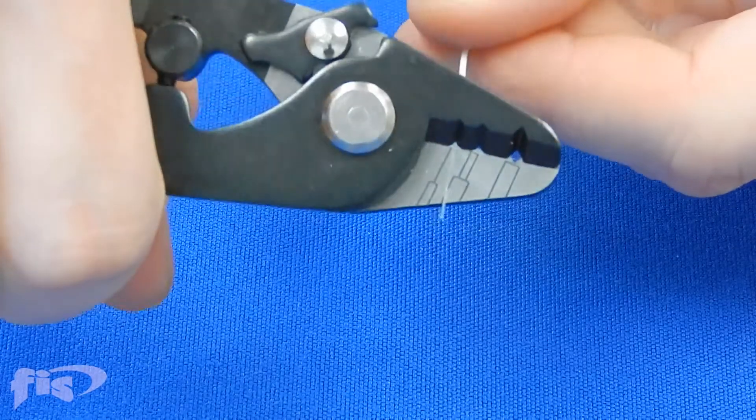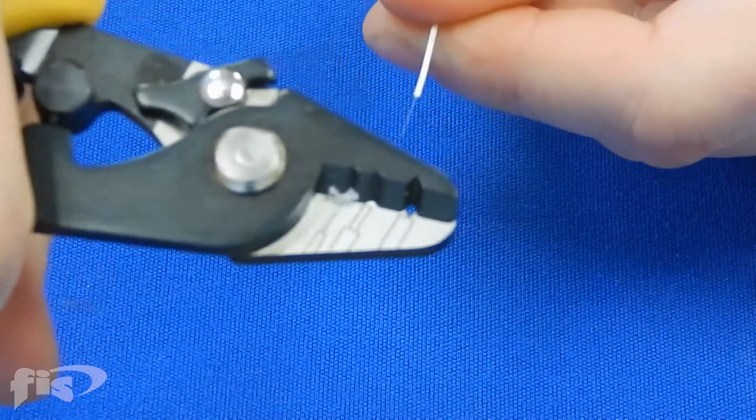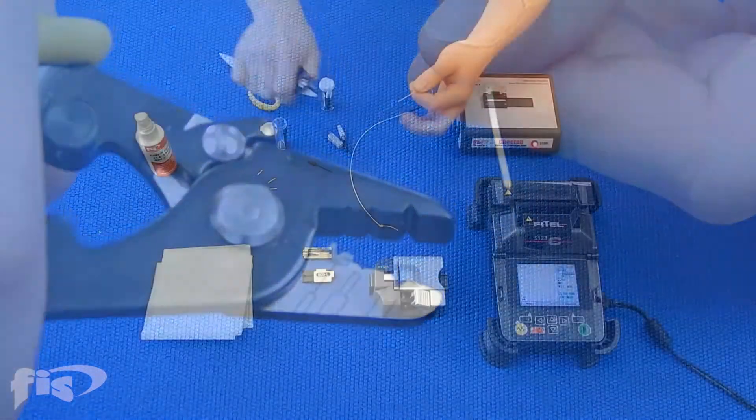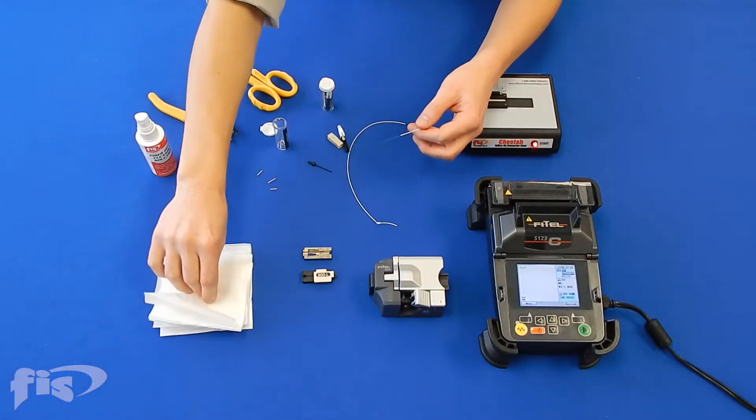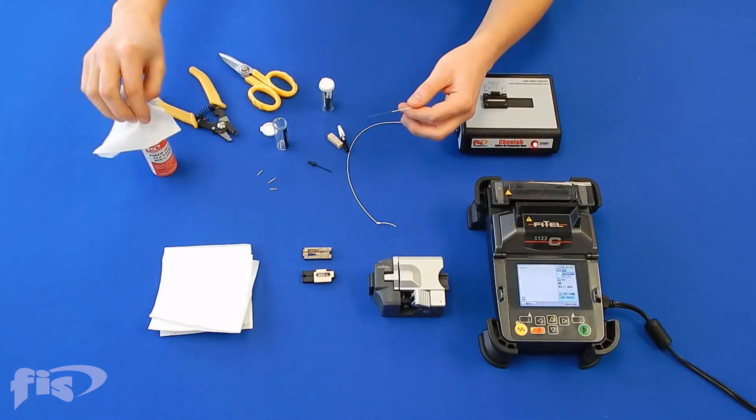Be sure to remove all of the acrylite coating from the fiber. Wipe the fiber clean with cleaning solution before cleaving.